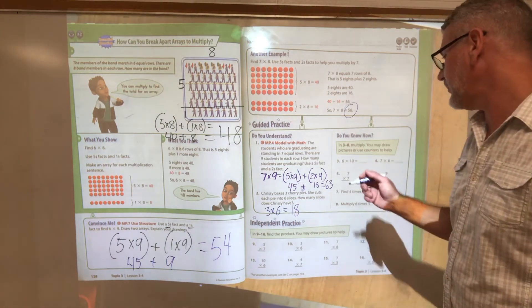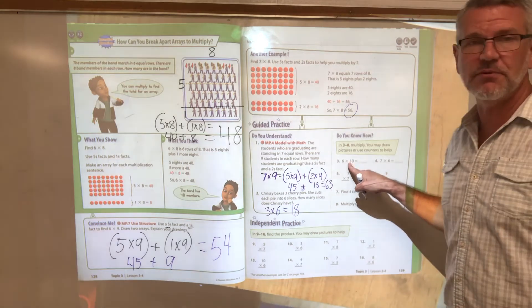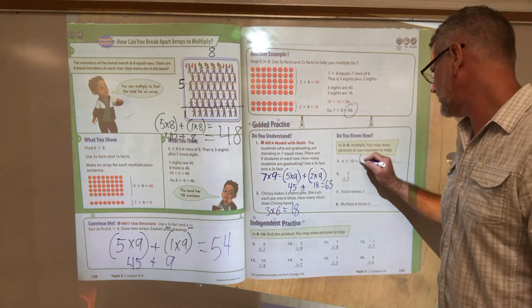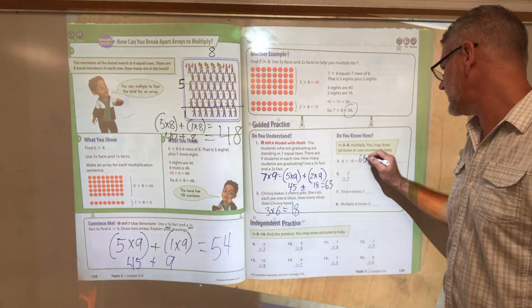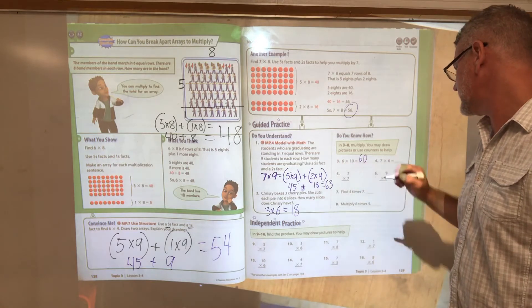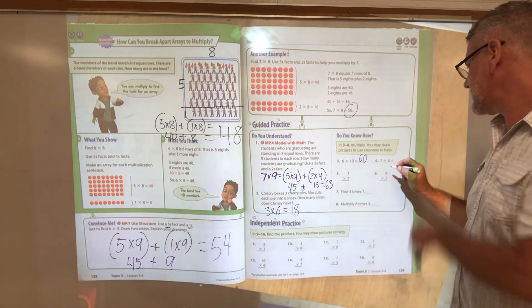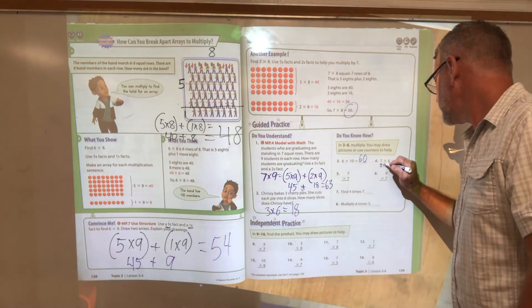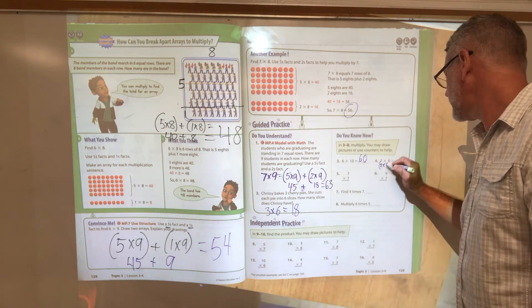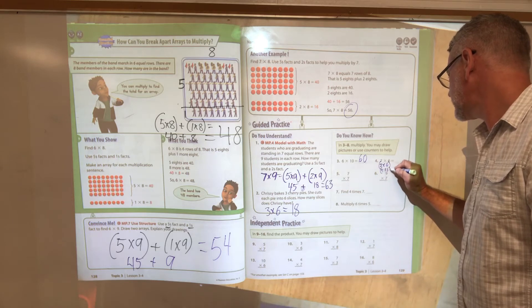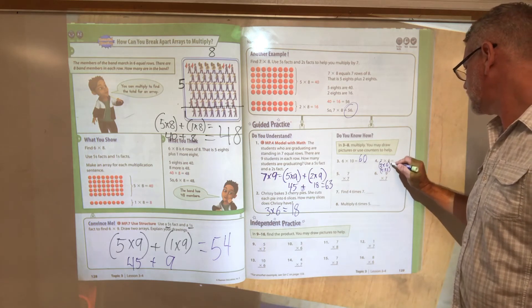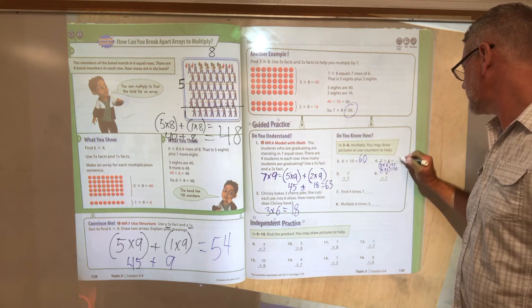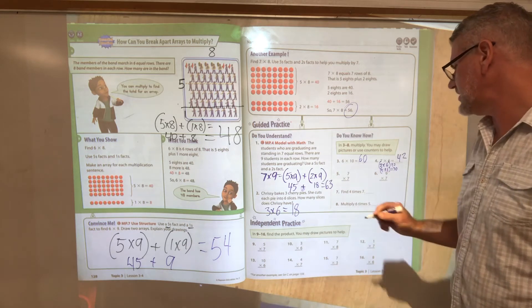In three through eight, multiply. Anytime you multiply times ten, take the first factor, add a zero to the end. Because that's six tens, sixty. Seven times six, I might break that into two times six plus five times six. Two times six is twelve, five times six is thirty, so that's going to give me forty-two.